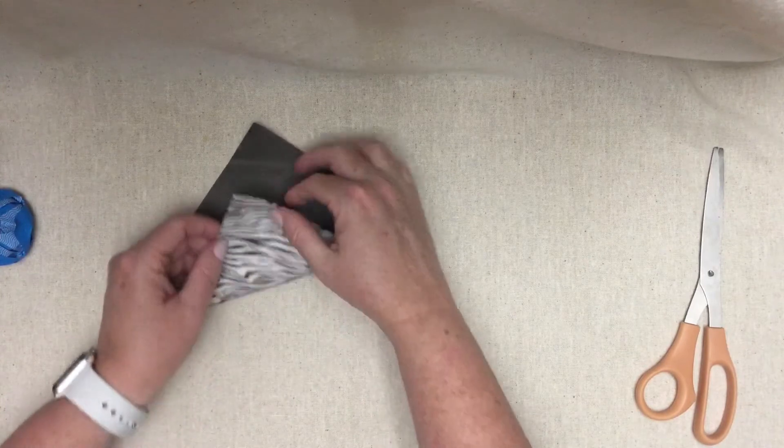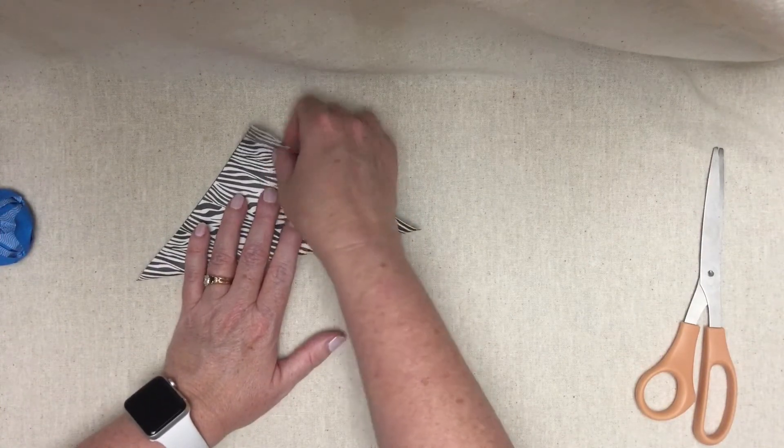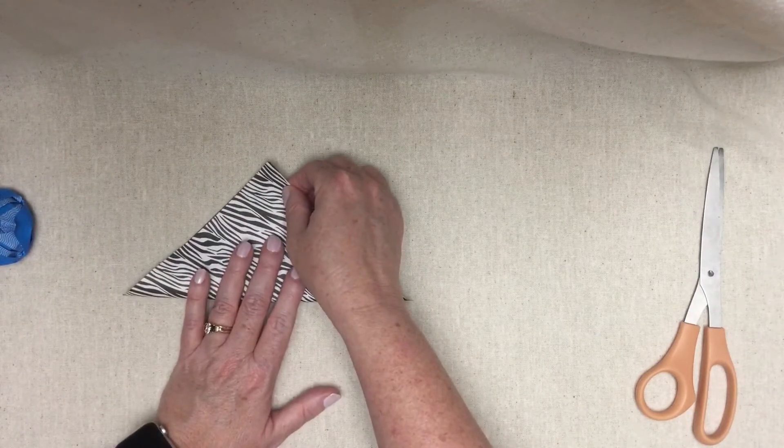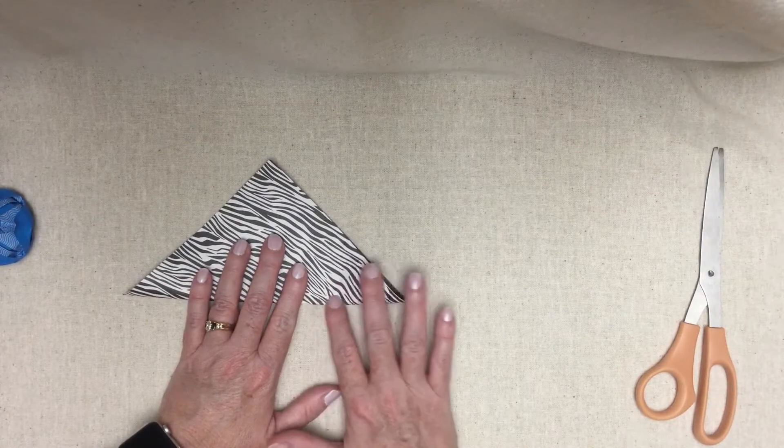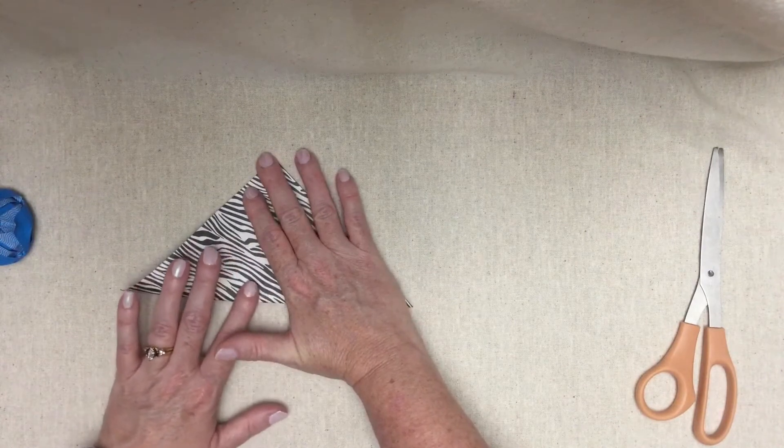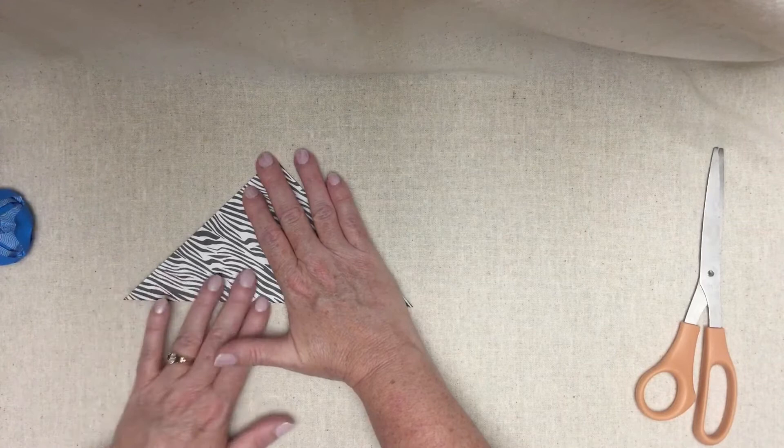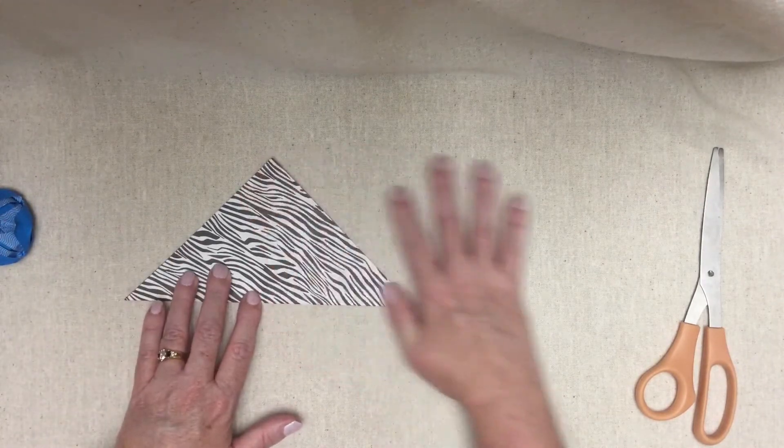First thing you're going to do is fold the paper in half along the diagonal. And I'm trying to match up the edges as well as I can here. The more closely everything is to perfectly folded, the better the result. You'll probably see as I go along that this is not going to be perfect. Perfection is only something we can strive for, not actually attain.